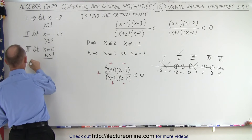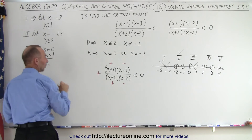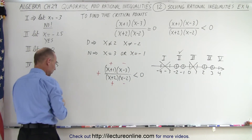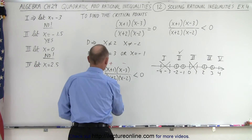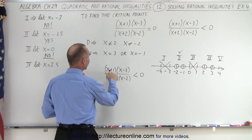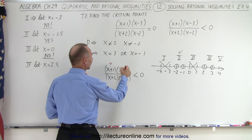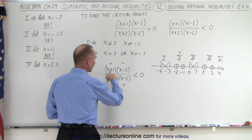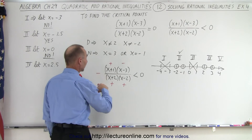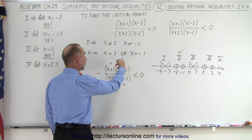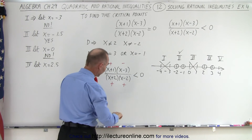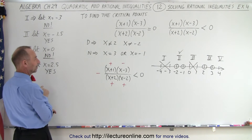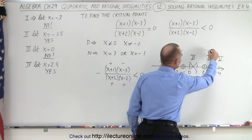For region four, let's pick x = 2.5, between two and three. Two point five plus one is 3.5, positive. Two point five minus three is negative. Two point five plus two is positive. Two point five minus two is positive. Three positives and one negative means the overall result is negative, and a negative number is less than zero. So region four satisfies the inequality.